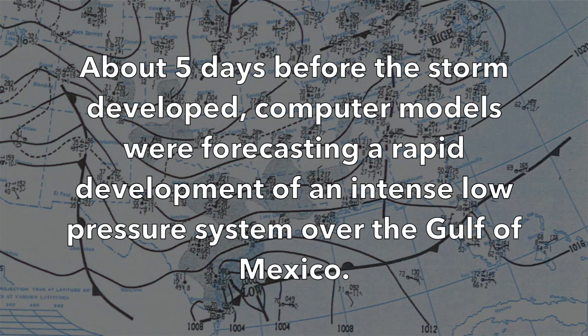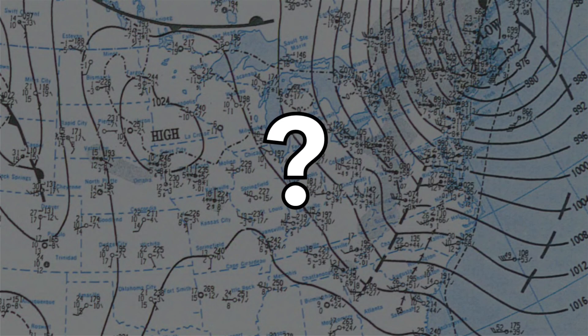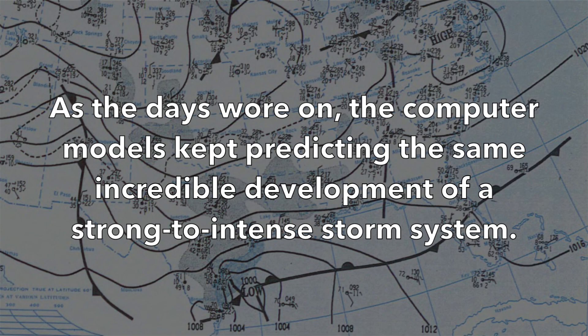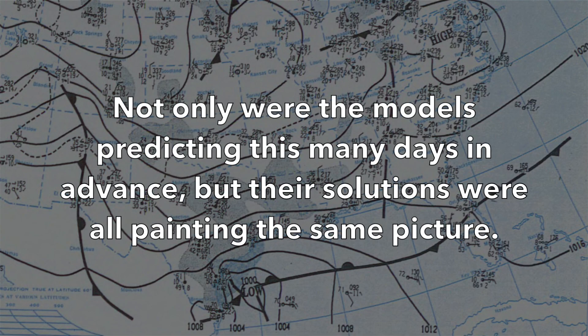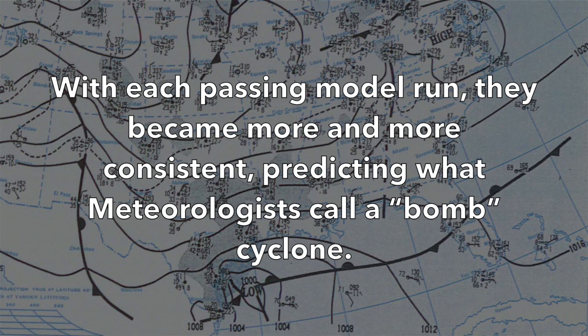Now let's get into the synoptic setup for the Storm of the Century. About five days before the storm developed, computer models were forecasting rapid development of an intense low-pressure system over the Gulf of Mexico. Computer models were not as advanced as they are today, so for them to predict such a strong storm five days in advance was incredible — almost unbelievable. As the days went on, the models kept predicting the same incredible development, and with each passing model run they became more and more consistent, predicting what meteorologists call a bomb cyclone.